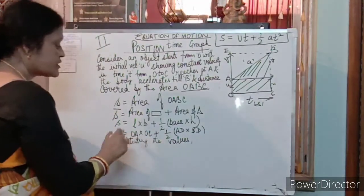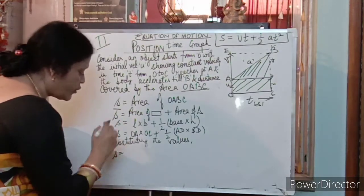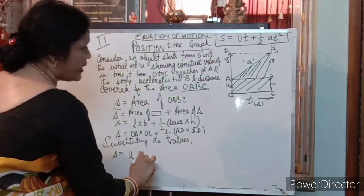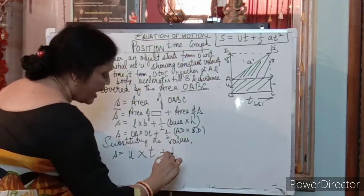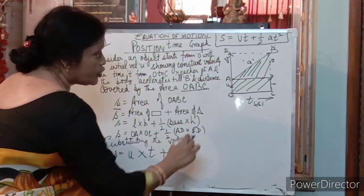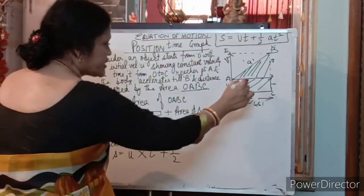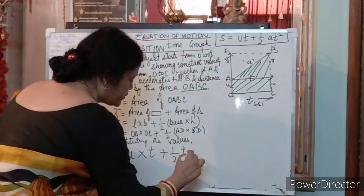Now, substituting the values. Ab inki jagah values dal dete hai. Ab agar mujhe O, A pata hai. What is O, A given? U multiplied by O, C is T plus half. A, D kitna hai? This is A, D. Toh aapka phir se kya aajayega? Agar O, C, T tha, toh yeh bhi T tha. Toh A, D is equal to T.